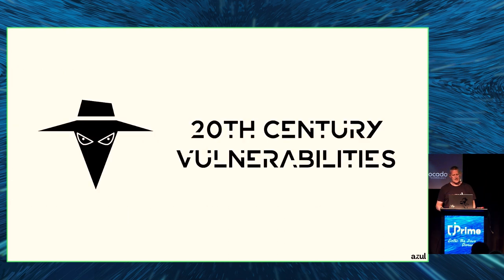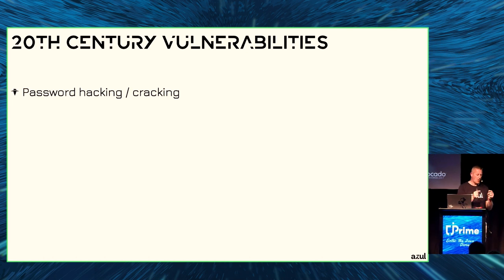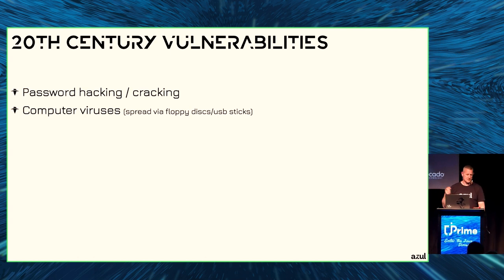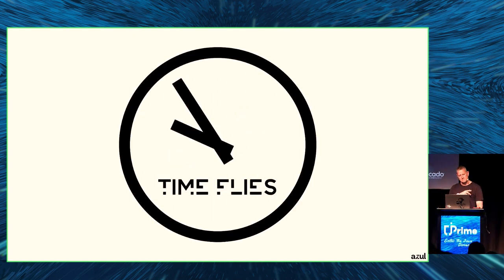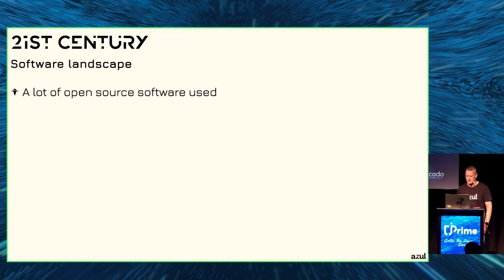The only connected systems were in government, banking, and energy providers. In the end, we had full control over the source code. If you bought some libraries, that was considered safe — you bought it in a store. Vulnerabilities at that time were password hacking — like going through the trash can looking for papers with passwords — and computer viruses spreading via floppy disks or USB sticks. It was the early days of internet hacking. Then time flew, and it was November 24th, 2021, and I suddenly realized it's the 21st century — things changed a lot.